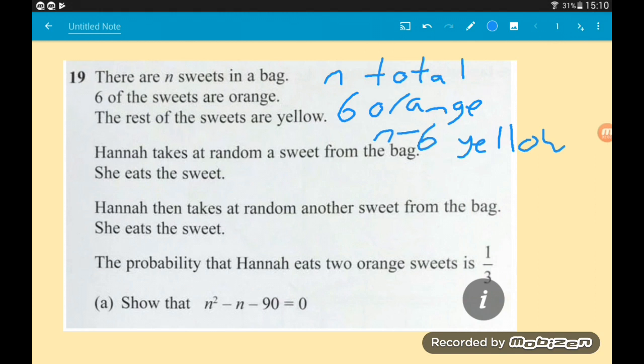Hannah takes a random sweet from the bag, she eats it. Good times. Hannah then takes another sweet from the bag and she eats that one too. Slow down Hannah. The probability that Hannah eats two orange sweets is one third. We want to show that n squared minus n minus 90 is equal to zero. Things definitely escalate there pretty quickly. We go from a girl eating two sweets to, where's this quadratic come from?